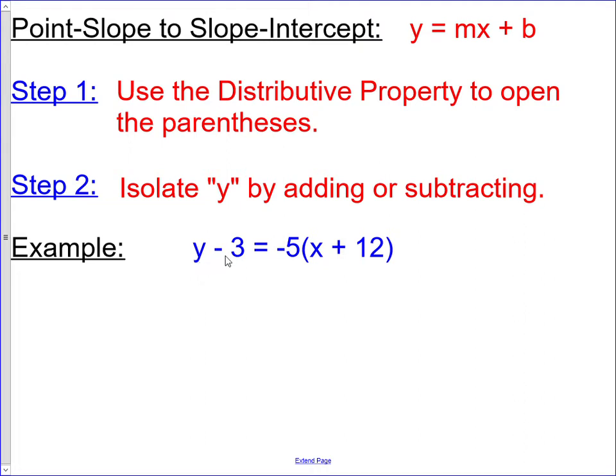We have y - 3 = -5(x + 12). We're going to use the distributive property to open the parentheses, so both terms get multiplied by -5. We end up with y - 3 = -5x - 60.